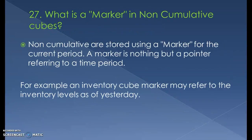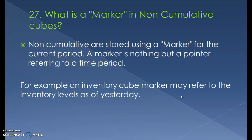What is a marker in non-cumulative cubes? A non-cumulative cube does not have a reference with time. Non-cumulatives in non-cumulative cubes are stored using a marker for the current period. A marker is a pointer referring to a time period. For example, in an inventory cube, a marker may refer to the inventory levels as of yesterday.